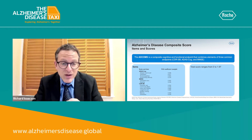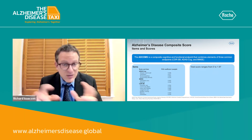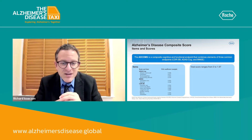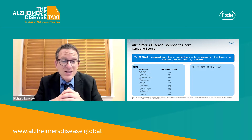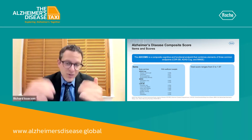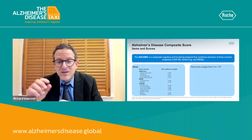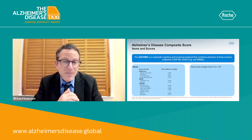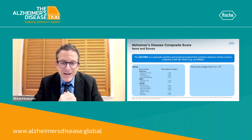These three include the CDR sum of boxes, or the Clinical Dementia Rating Scale sum of boxes. It also includes the ADAS-cog, which is the Alzheimer's Disease Assessment Scale cognitive subset, components of that. And finally, it also includes components of the MMSE, or the Mini Mental State Exam.